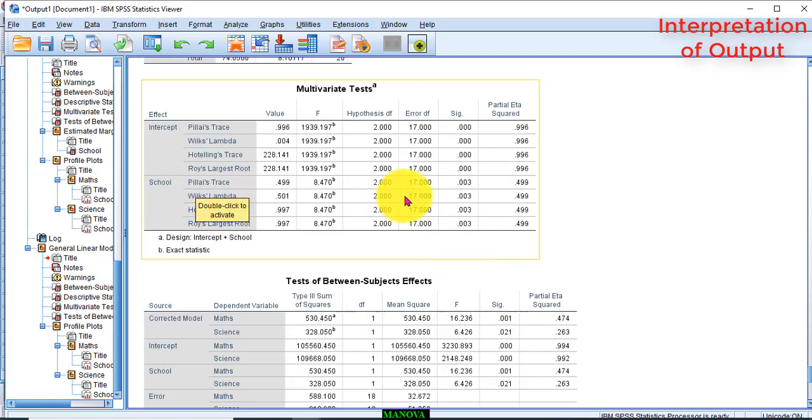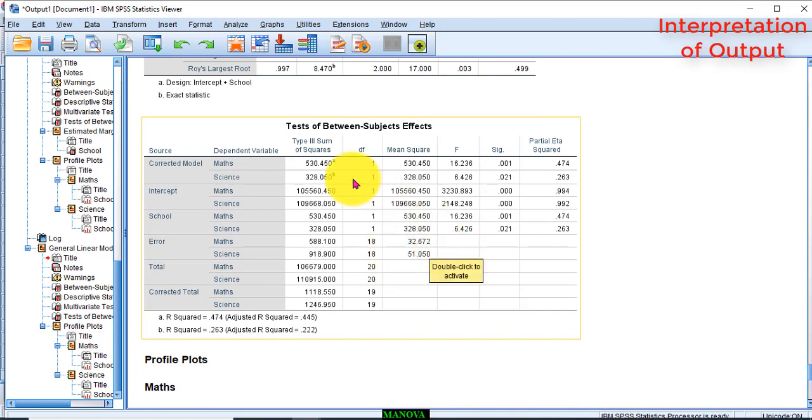And here also, you just see that math score is significantly different across the categories of schools. And science score is significantly different at a percent level of significance.